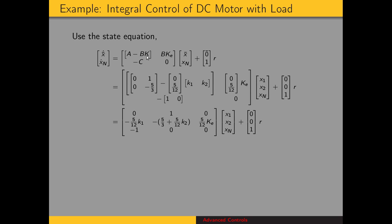We have the state variable feedback matrix K and our error feedback gain ke. Our new state vector is x1, x2, and x sub n. Here's our new input matrix: 0, 0, 1. We're going to use the state equation to find these gains, because from the state equation is where we get the characteristic equation.